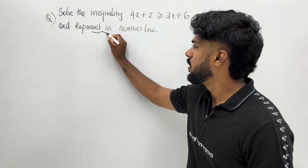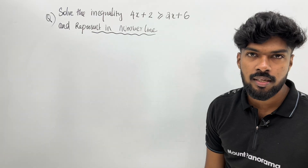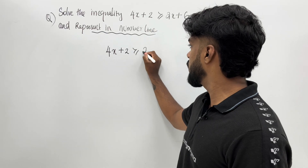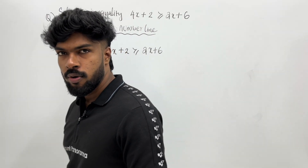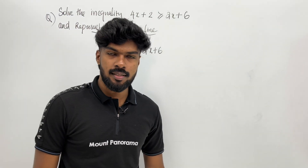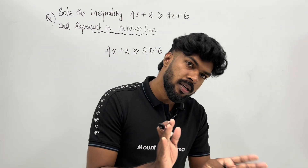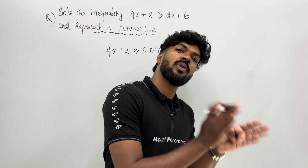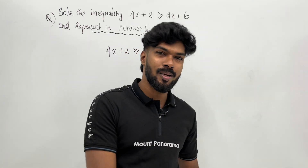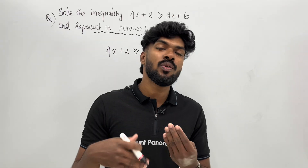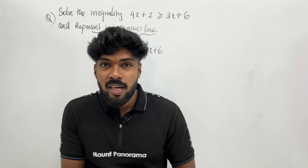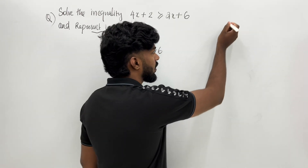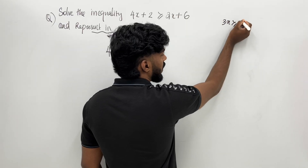That is how it is. I will represent the number. I will tell you: 4x plus 2 greater than or equal to 2x plus 6. How do I solve it? I will tell you that you subtract — bring the x terms together. 3x is greater than or equal to 12.